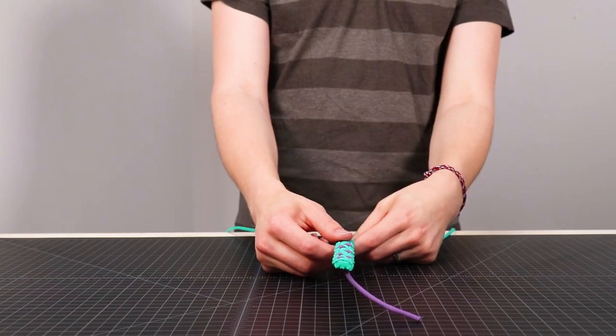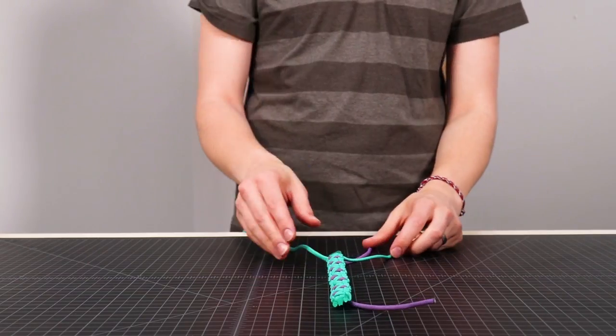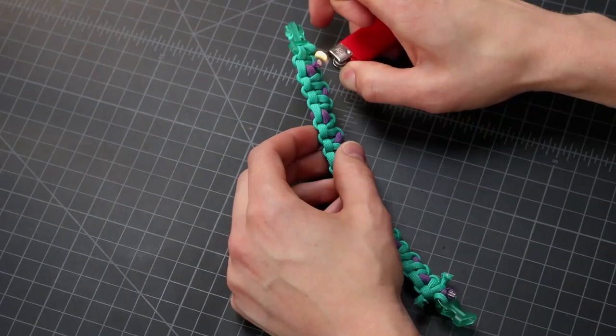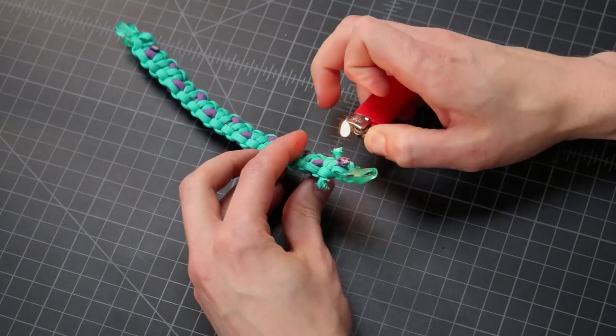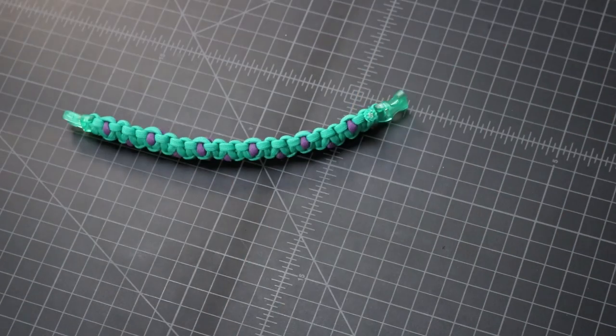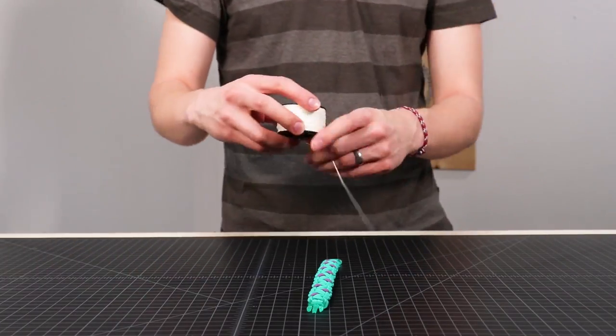Alright, so we got that weave done. I'm going to go ahead and clip the ends of this before we move on to the lacing. And now it's time for the micro cord lacing. This is a little bit more complicated of a weave than other ones.